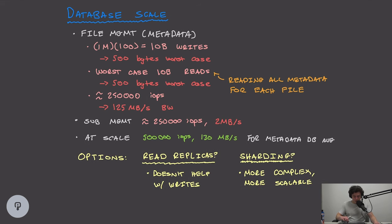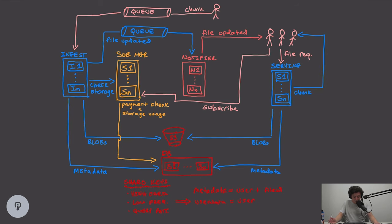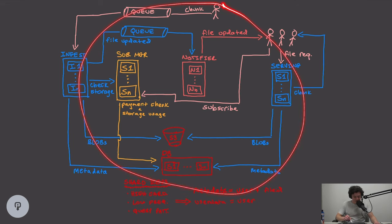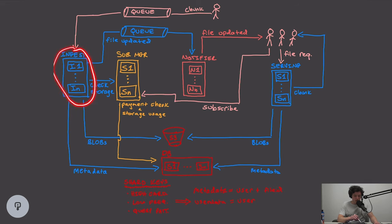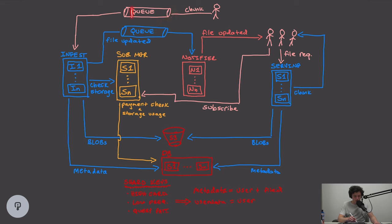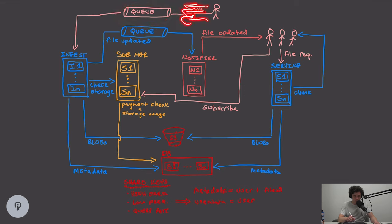Let's look at the high-level diagram of how the service works. Our user uploads a chunk, which first goes into a queue. The ingest service is horizontally scaled, and this queue handles influxes of uploads — under normal load there's minimal latency, but under heavy load the queue absorbs the spike. The ingest server first checks storage by going to the subscription manager, which queries the database to verify the user's plan, how much storage they can use, and whether uploading this chunk would exceed their limit.